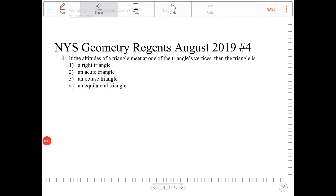If the altitudes of a triangle meet at one of the triangle's vertices, then the triangle is... Okay, so what this question is really asking for is whether or not you understand what it means for a triangle to have an altitude.